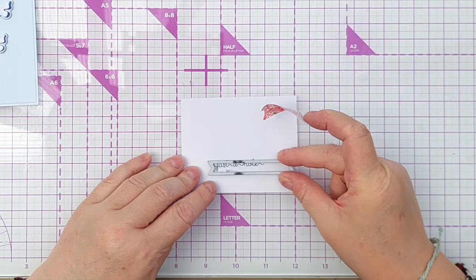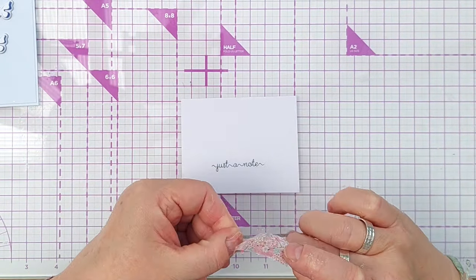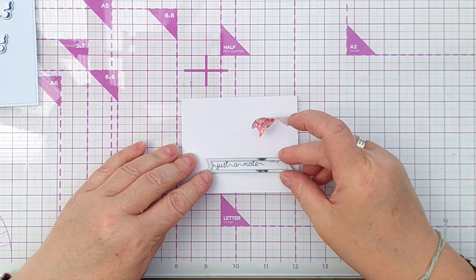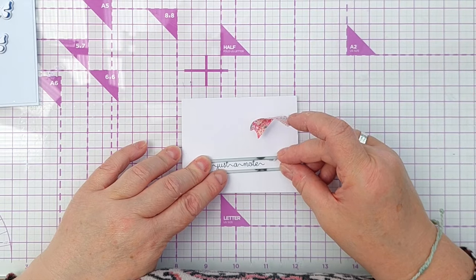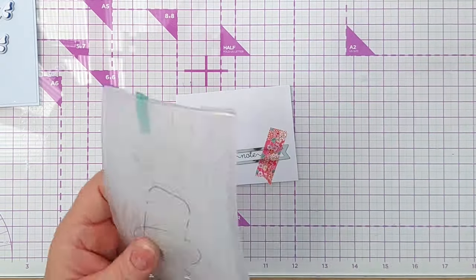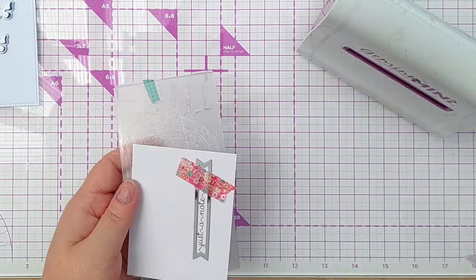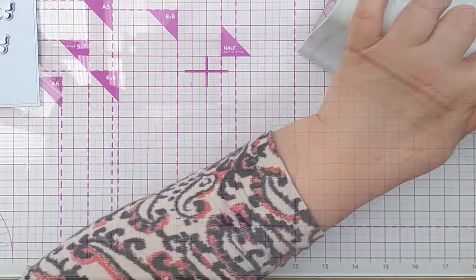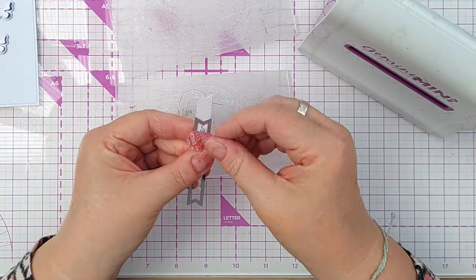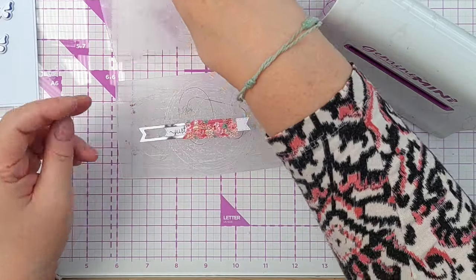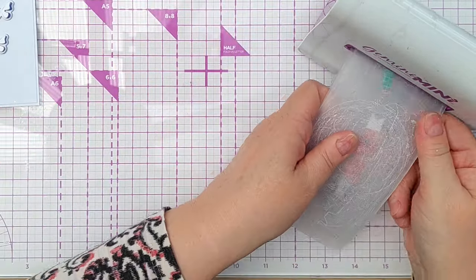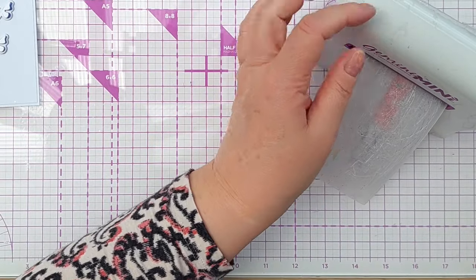And I'm going to use this stitched edge banner die to cut it out. It's obviously too long so I've just shuffled the die along. And I'm going to run that back through and just cut the very tip.